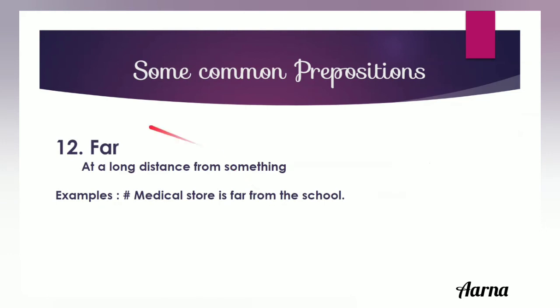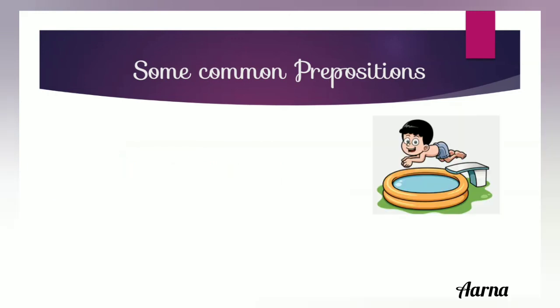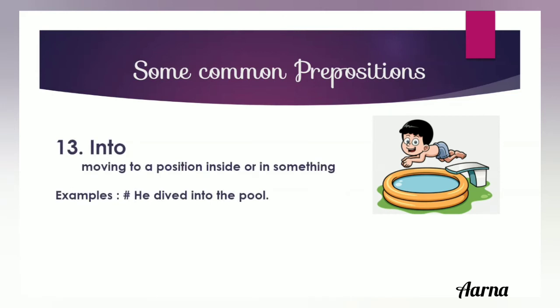The next preposition is 'far', meaning at a long distance from something. You can take 'far' as the opposite of 'near'. For example, 'medical store is far from the school' means it is some kilometers away. The next preposition is 'into', used when an object is moving to a position inside or in something — it is used for movement. For example, 'this boy is jumping into the pool'. But 'in' is used when something is already inside.